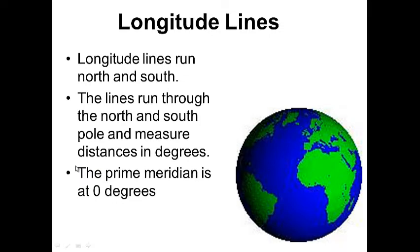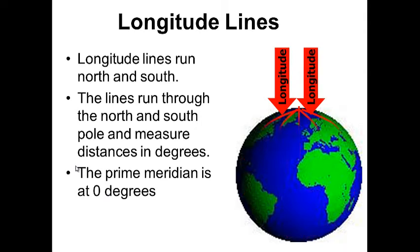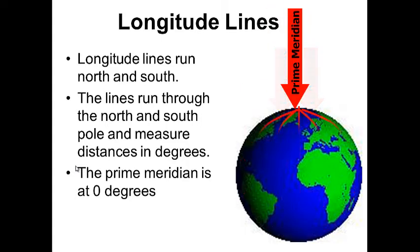Longitude lines run north and south, and these lines run through the North and South Pole, measuring distances in degrees. The prime meridian is at zero degrees. Remember, the equator goes horizontal at zero degrees — well, for longitude lines we have an imaginary line called the prime meridian that runs at zero degrees, running right down the middle.